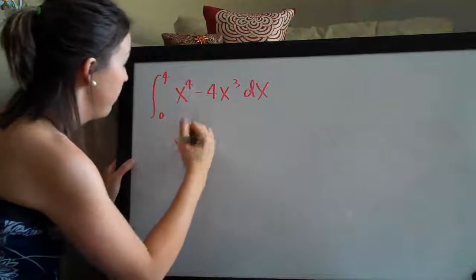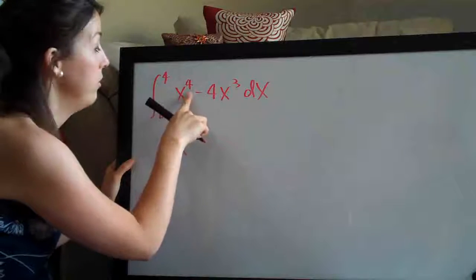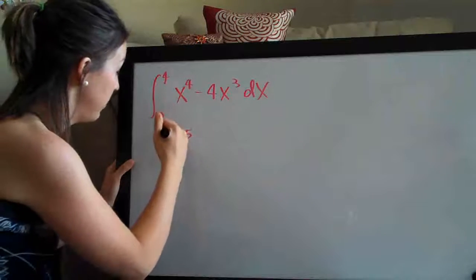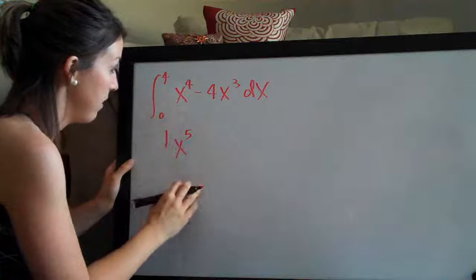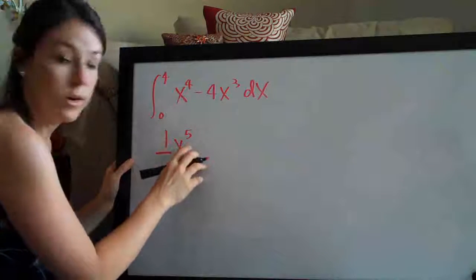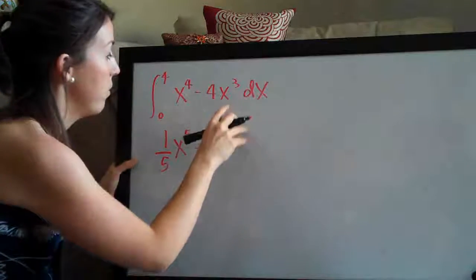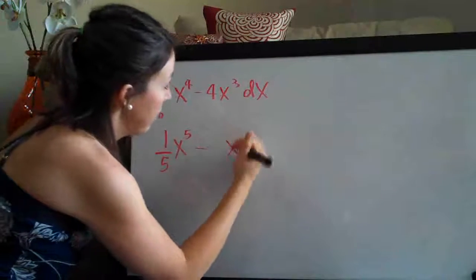As always, the first thing we do is add one to the exponent. So four plus one is five and then we divide the coefficient, which is an implied one here, by the new exponent, which is five. So one over five and then we, again, add one to the exponent.